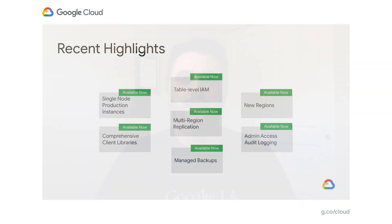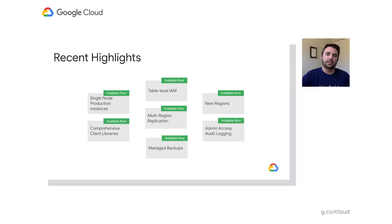Let's quickly talk about some of the recent highlights. On the fully managed side, Cloud Bigtable integrates into Cloud IAM for user access and authentication. At the end of 2019, we announced table-level IAM, allowing you to have more granular rules on who can access data within clusters. We also announced multi-region replication to enable you to replicate data across the globe, as well as a host of new regions that rolled out to support Cloud Bigtable.